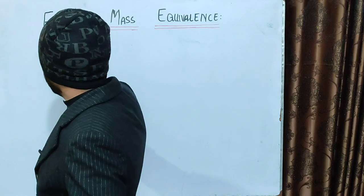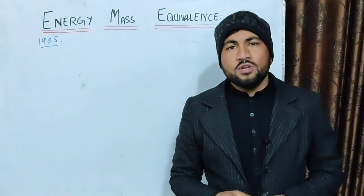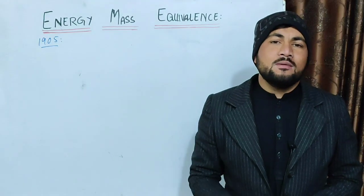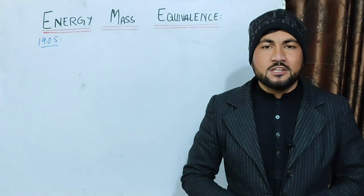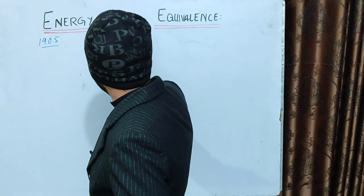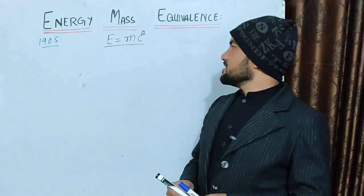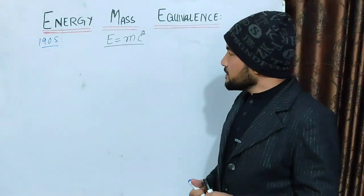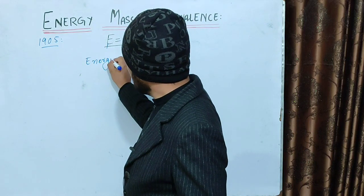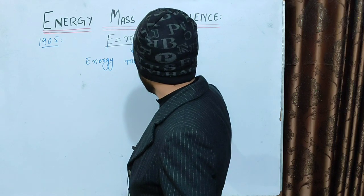In Einstein's research paper in 1905, there is a special theory of relativity, and this is the equation of the energy-mass equivalence. In this equation, E stands for energy, m stands for mass, and c is the speed of light.